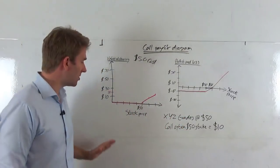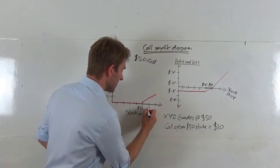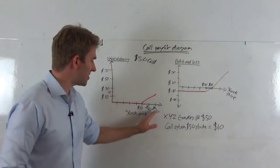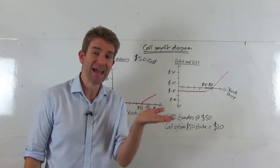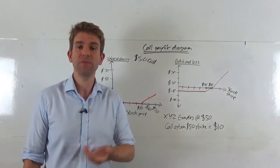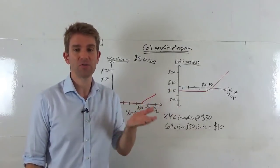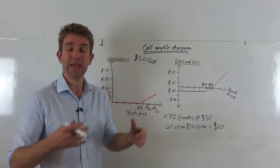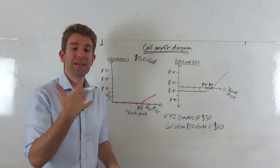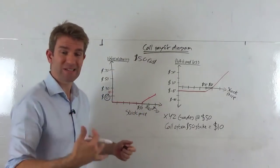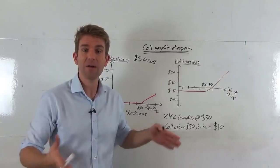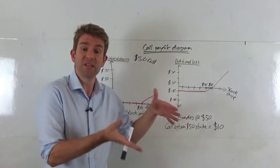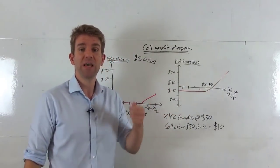However, if we look at an expiry price of $60 or $70 — if the stock is trading at $60 and you've got a contract that says you can buy that stock at $50, is that worth something? Yes, it's worth $10 to you. The value of that contract at expiry is going to be $10, which is the expiry price minus the strike price. If it's trading at $70 at expiry, the value of that option is going to be $20.